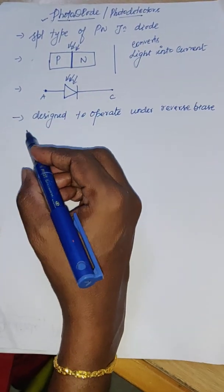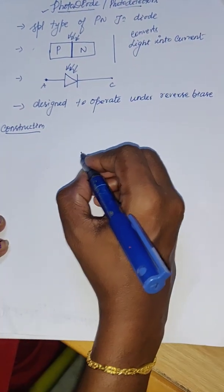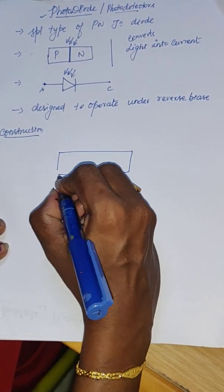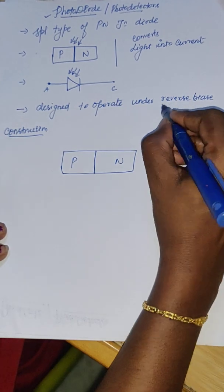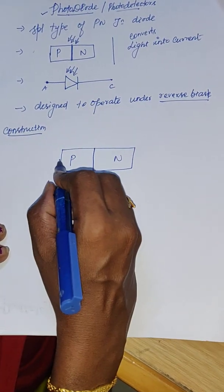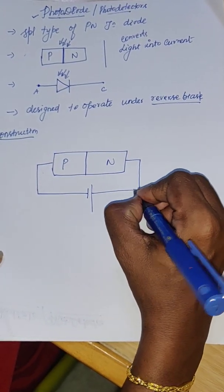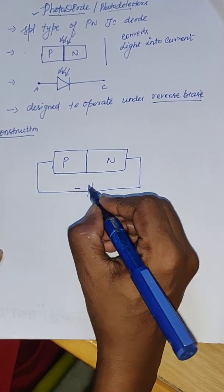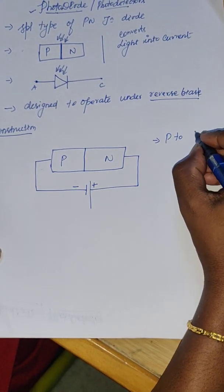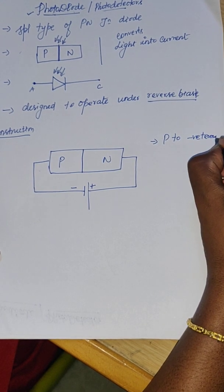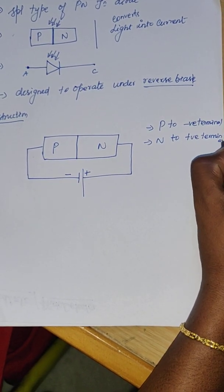Now let's move on to the construction. We have a P-type semiconductor and an N-type semiconductor with a junction achieved between them. Since it works only under reverse bias, we connect it in the reverse bias condition: the P region is connected to the negative terminal of the battery and the N region is connected to the positive terminal of the battery. That is the reverse bias connection.